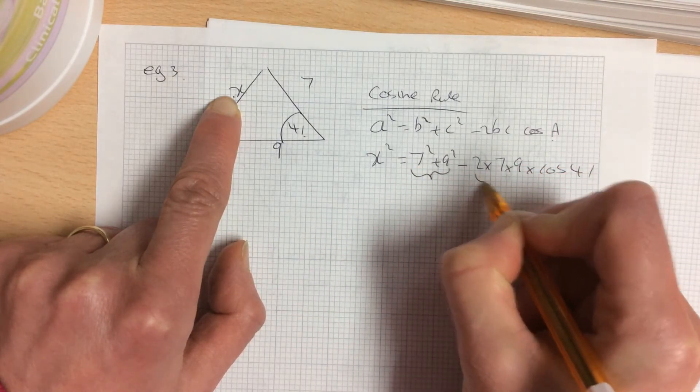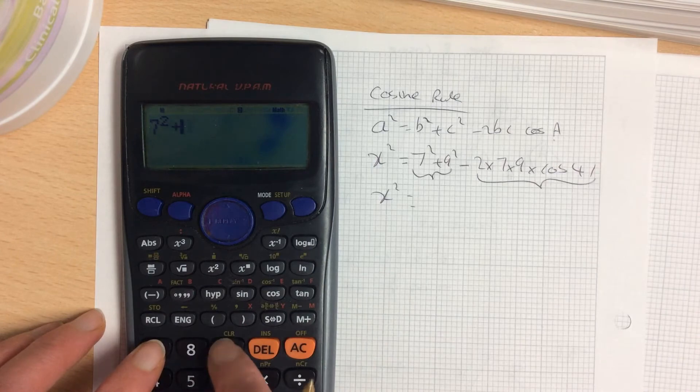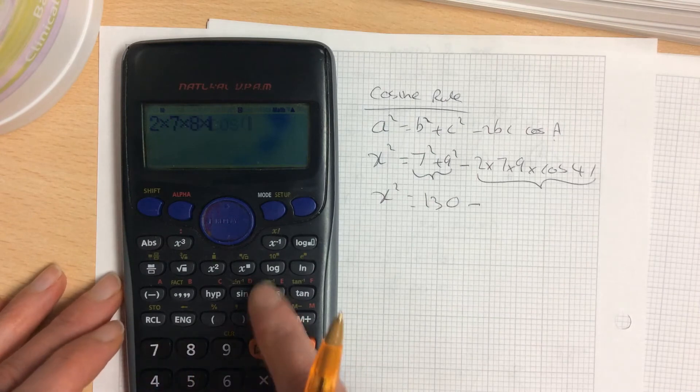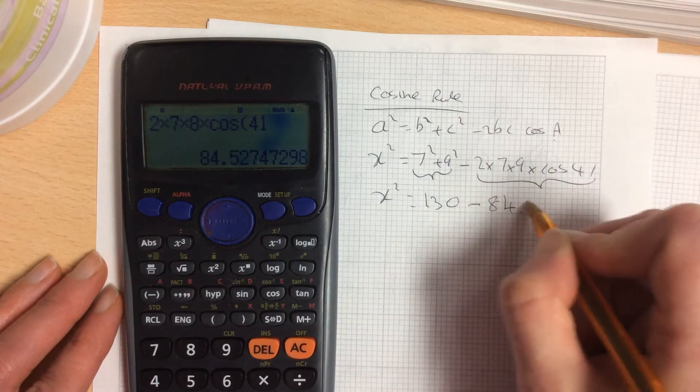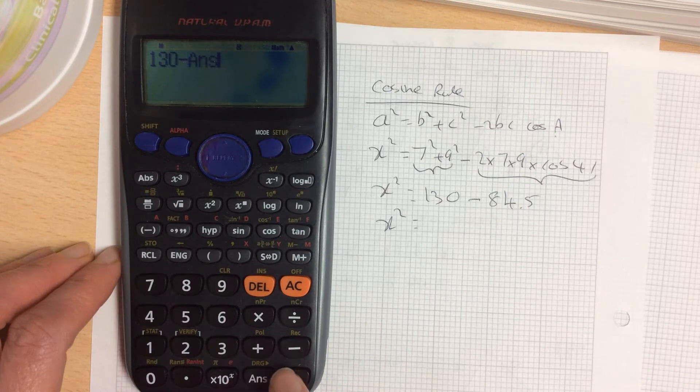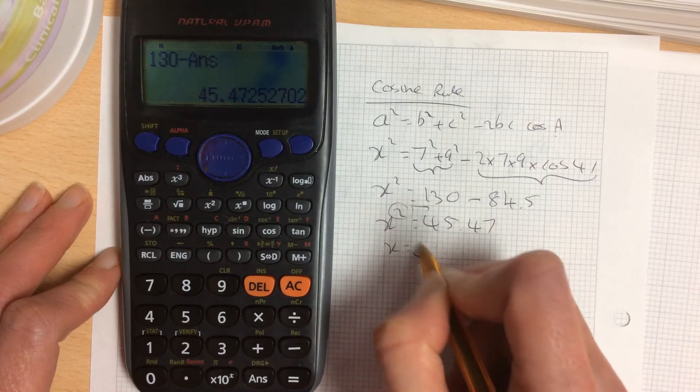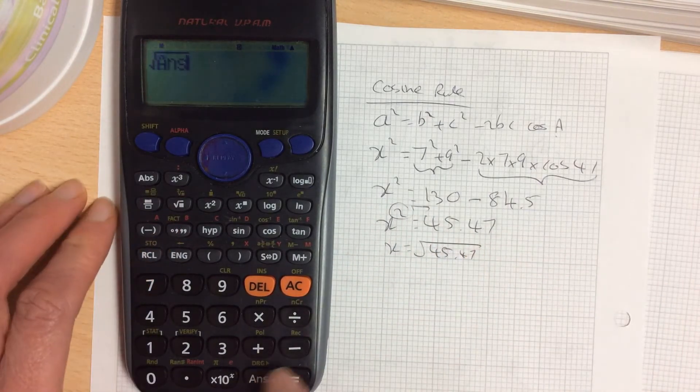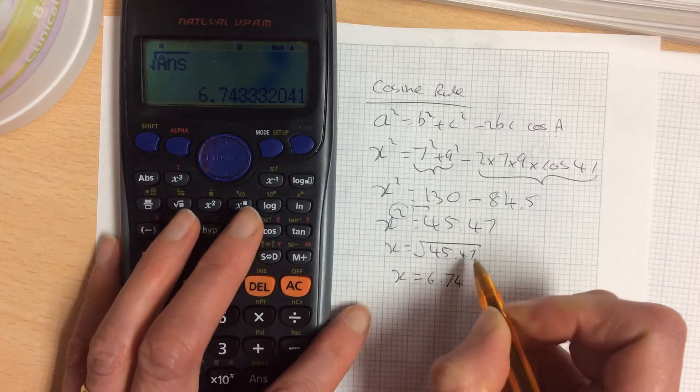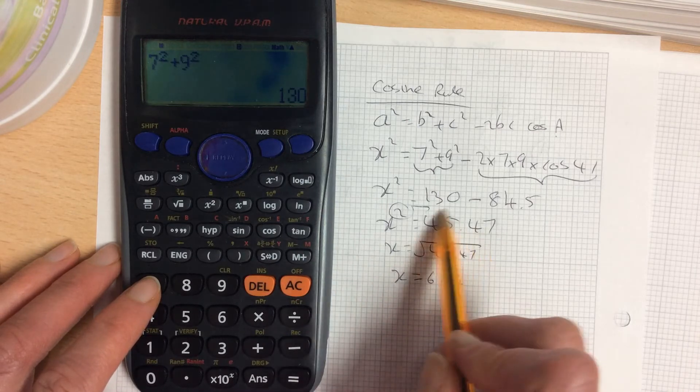So x squared is the other two sides squared minus 2 times the other two sides times cosine the angle. Big tip here: pair them off in the calculator. Don't put it all in one row. Do 7 squared add 9 squared to give you 130, minus, then do 2 times 7 times 9 times cosine 41 to give you 84.5. So x squared is 130 minus my answer to give you 45.47. Then square root to give you x equals 6.74. A lot of stuff going on, just double check everything there.